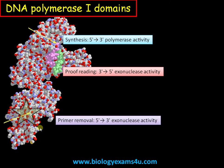The third domain is involved in primer removal, that is 5'-3' exonuclease activity. At the end of DNA replication, the short stretch of RNA primer that initiates replication should be removed and replaced with DNA nucleotides. This is done by the 5'-3' exonuclease activity of DNA Pol I, which is a unique feature of DNA Pol I.